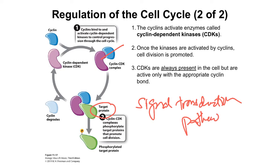This mechanism is central to the regulation of the cell cycle and allows it to proceed in a sequential manner. The cyclin level goes up and down because once the target proteins are phosphorylated, the cyclin is degraded by proteases. Then at some point in the cycle, cyclin is again synthesized by ribosomes and the whole cycle starts all over again.